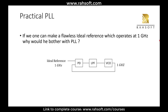So previously we had this loop. If you remember, I said that imagine we have an ideal reference — let's say it's operating at 1 GHz — and then this VCO is also operating at 1 GHz, so our loop tries to lock this VCO to the ideal reference, making the VCO follow this reference. We said that this ideal reference is flawless, but this VCO is going to have some frequency fluctuations, so we have to use this loop in order to fix the VCO. But now there's a contradiction here.